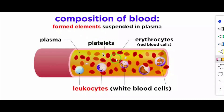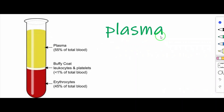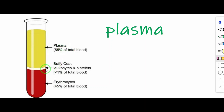These formed elements are suspended in the plasma. Three types of formed elements are there: platelets, erythrocytes and leukocytes. The yellow color liquid area in the test tube is known as plasma. 55% of total blood is plasma, 1% is leukocytes and platelets, and the remaining 45% of the blood is erythrocytes or red blood cells.